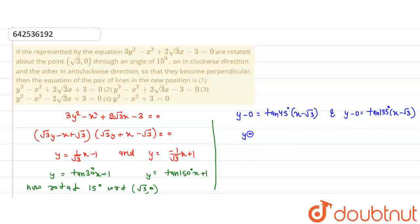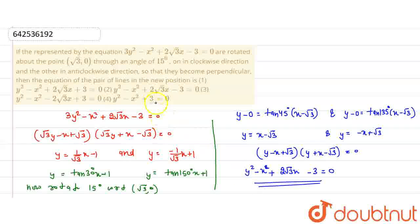This equation will be y = x - √3 and this equation will be y = -x + √3. Now we combine these equations, we will get (y - x + √3)(y + x - √3) = 0. This will come as y² - x² + 2√3x - 3 = 0. So this is the new equation at the new position.